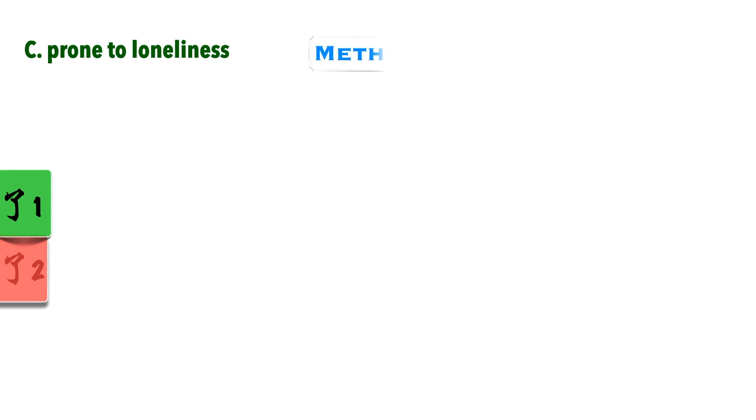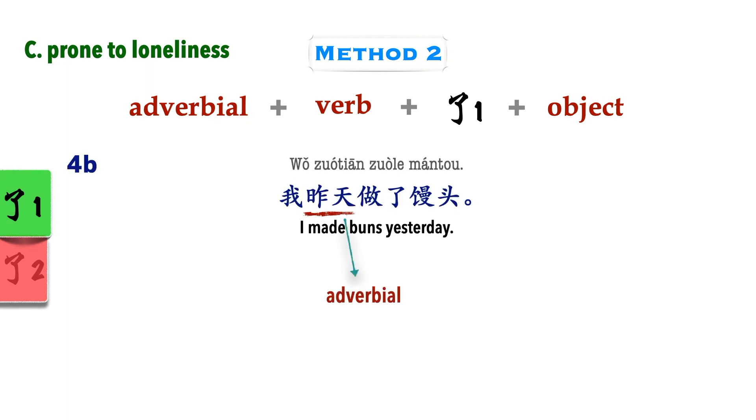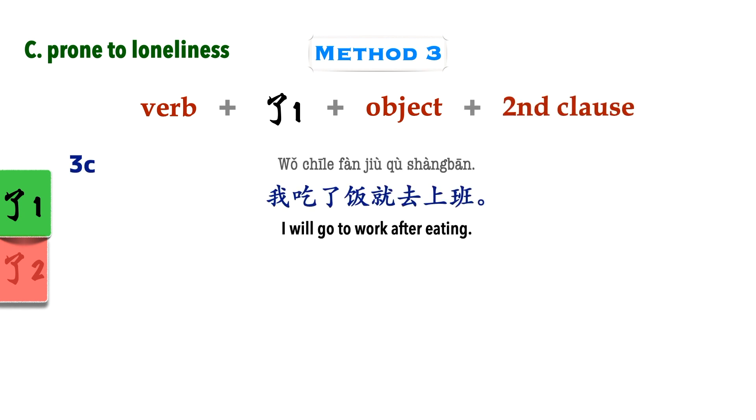The second way to avoid sounding unfinished is having an adverbial adjunct before the verb. 我已经吃了饭. 我昨天做了馒头. If you have been paying close attention, you might have guessed the third way to avoid sounding unfinished. That's right, by finishing the sentence with more information, like our previous sentence: 我吃了饭就去上班.